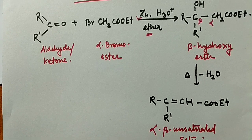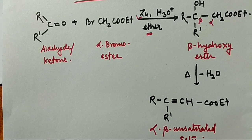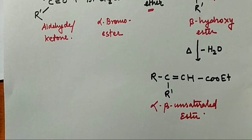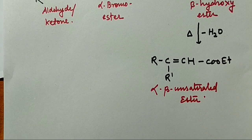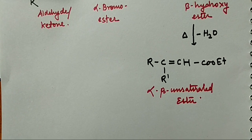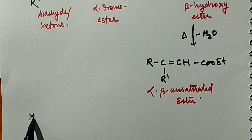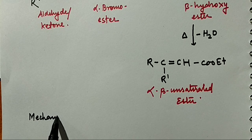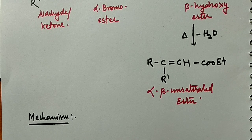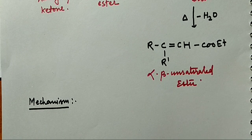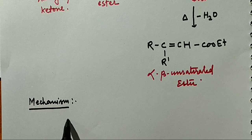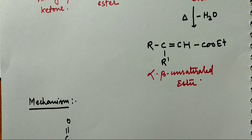So this reaction is called the Reformatsky reaction. Now let us look at how the reaction proceeds — the Reformatsky reaction mechanism. In the Reformatsky reaction mechanism, zinc attacks on the carbonyl carbon of the alpha-bromoester. This is the carbonyl carbon of the alpha-bromoester.